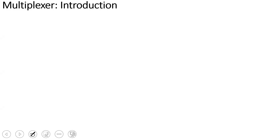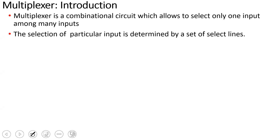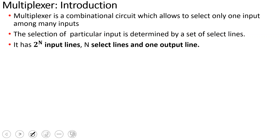MUX is a short form for multiplexer. A multiplexer is a type of combinational circuit that allows you to select only one input among many inputs. If you have n inputs, you can pass one to the output. Based on the select lines, we will determine the output. If you have n select lines, you will have 2-to-the-power-n input lines and 1 output line.